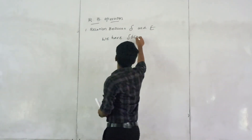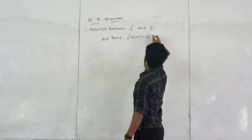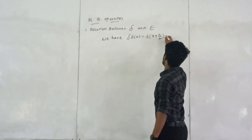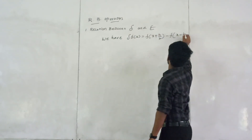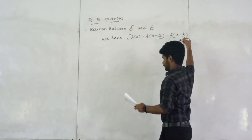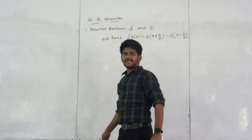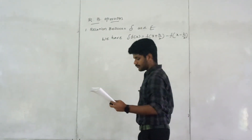Delta f of x is equal to f of x plus h by 2 minus f of x minus h by 2.